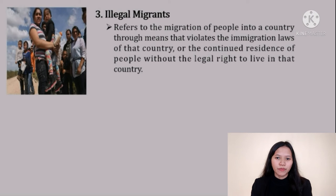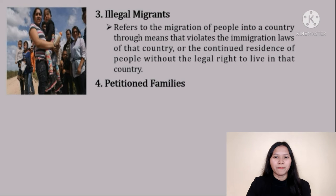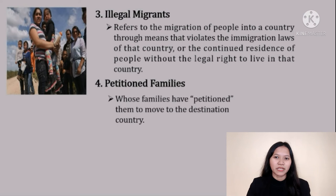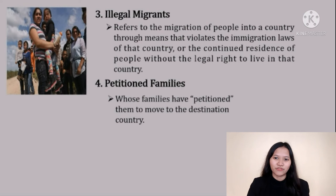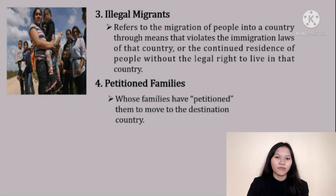Third is illegal migrants — refers to the migration of people into a country through means that violate the immigration laws of that country, or the continued residence of people without the legal right to live there. Fourth is petition families — families who have been petitioned to move to the destination country. For example, anyone wanting to become a permanent resident of the U.S. and obtain a green card needs an immigrant petition filed on their behalf by either a relative or an employer. Immigrant visa petitions are family-based or employment-based.